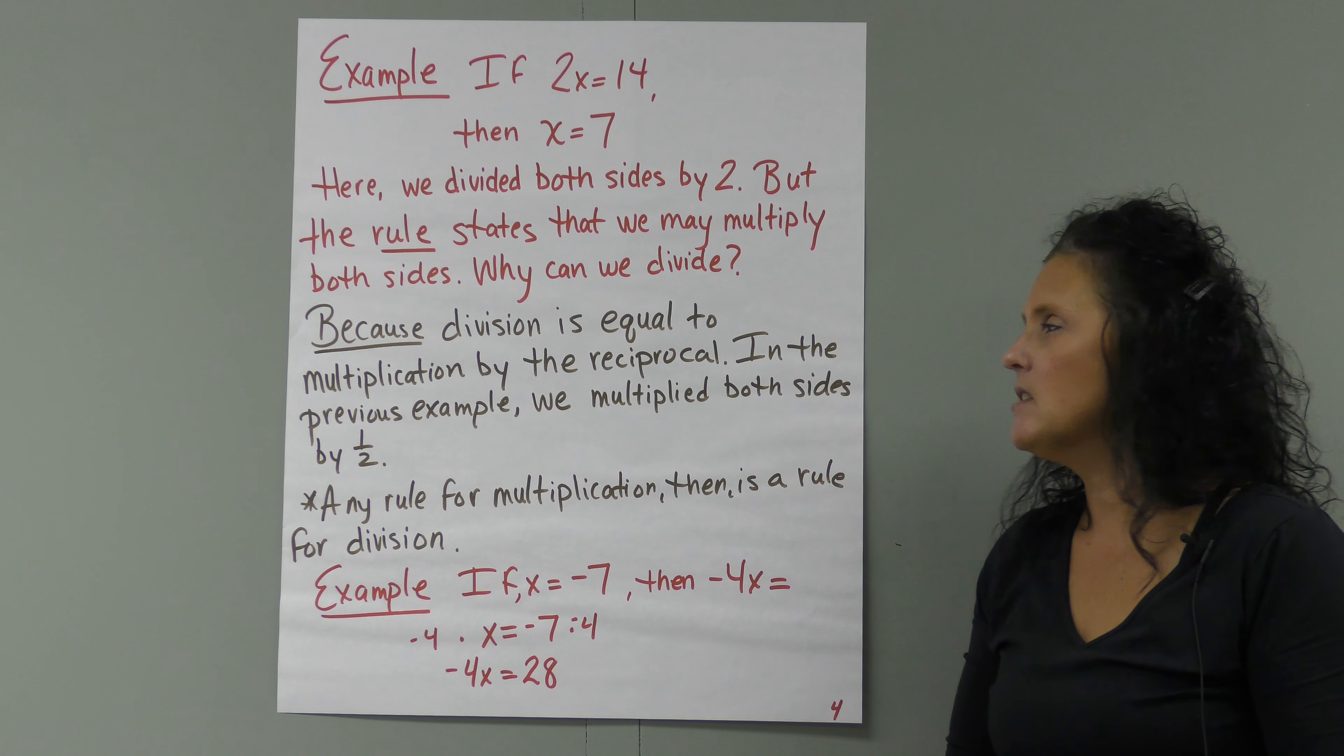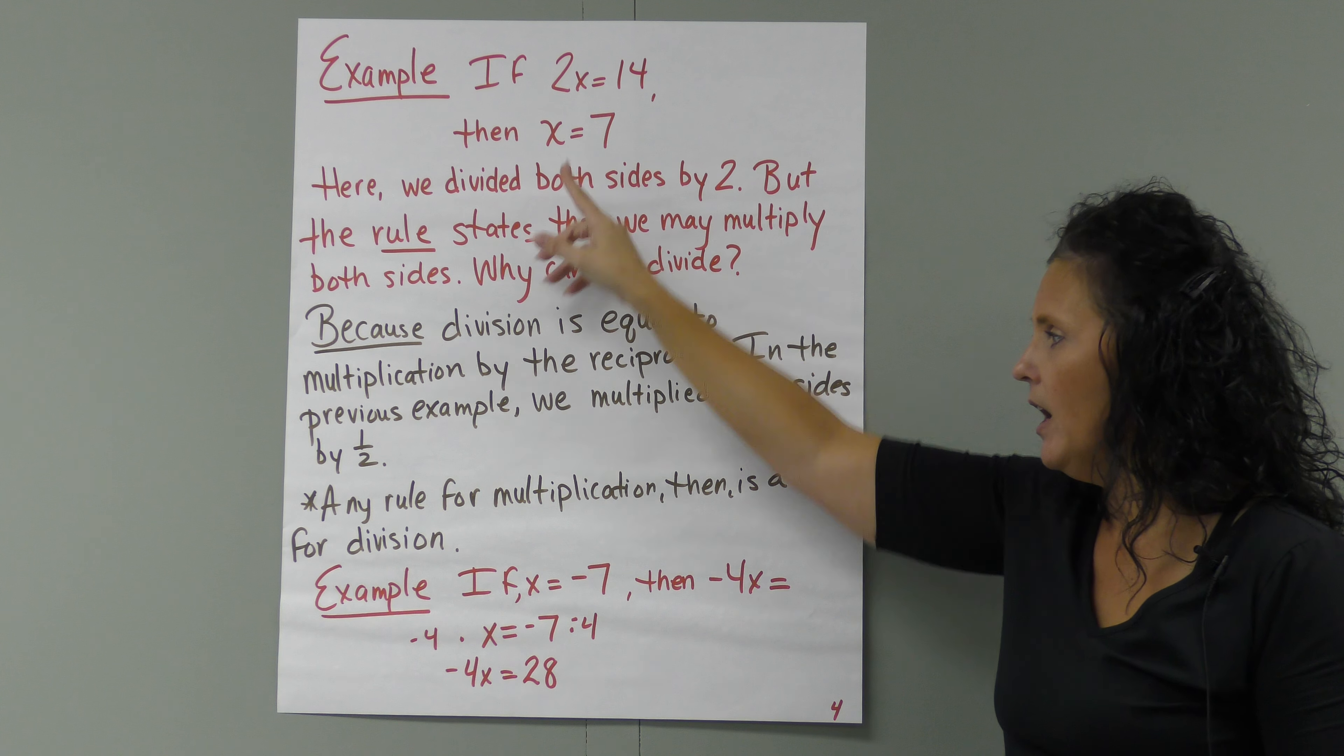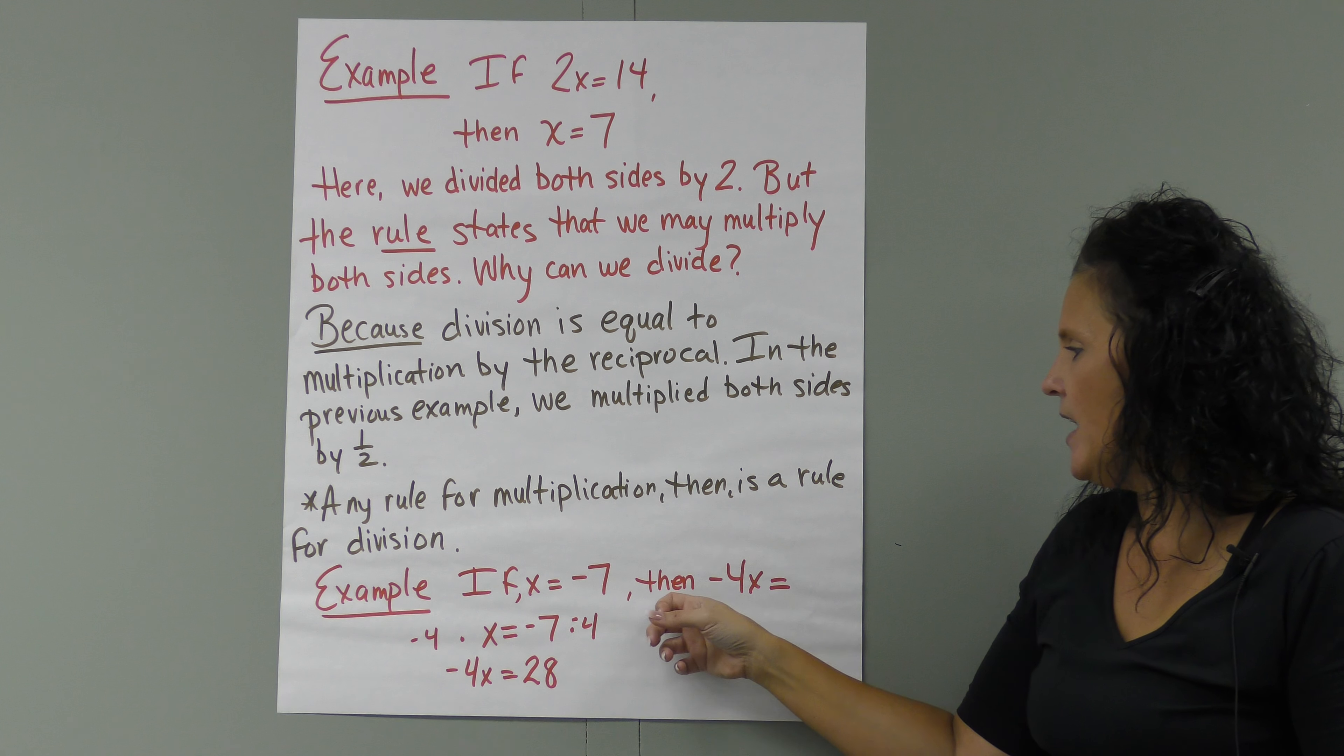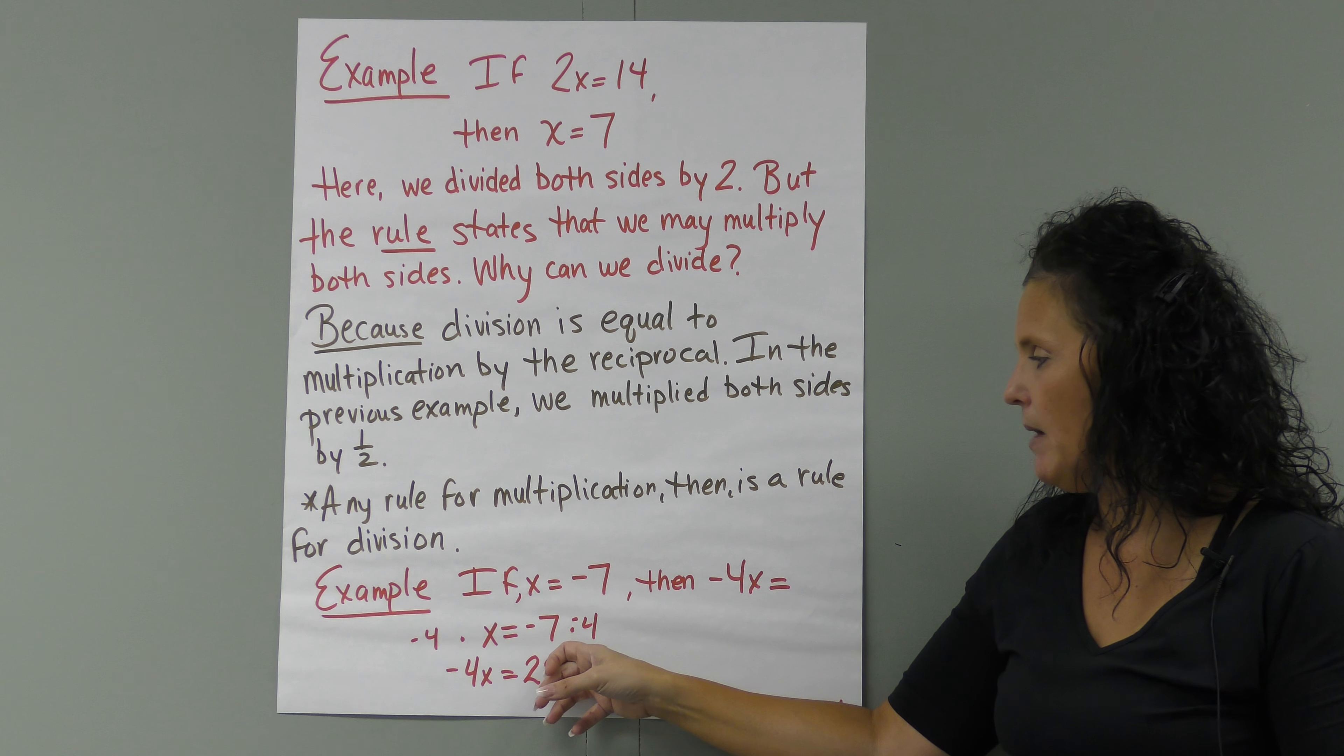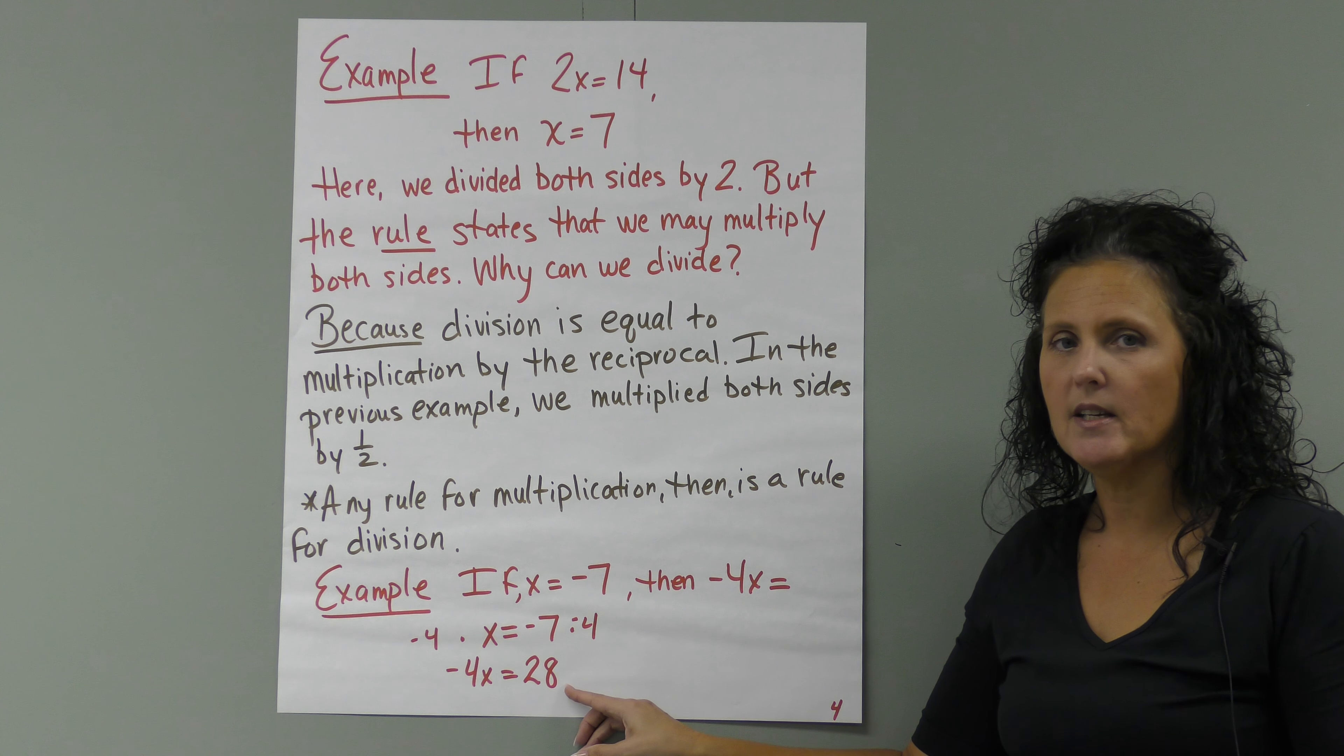It's the same as the addition and subtraction. Division is equal to the multiplication by the reciprocal. Reciprocal means we flipped it over, the opposite. In the previous example, we multiplied both sides by 1 over 2. That's what we did here. Any rule for multiplication then is also a rule for division. So let's look at the last example. If X equals negative 7, then negative 4X equals negative 4 times X. If we multiply negative 4 on this side, we have to multiply the 7 by negative 4 on this side. Negative 4 times X is negative 4X, and negative 7 times negative 4 is positive 28. When we multiply a negative times a negative, we get a positive.